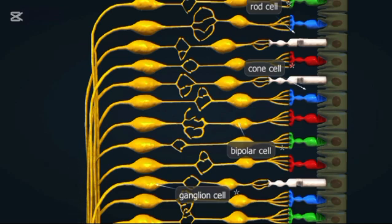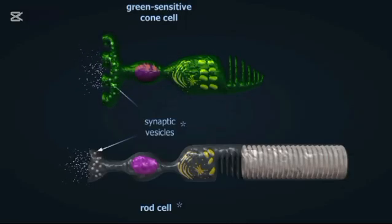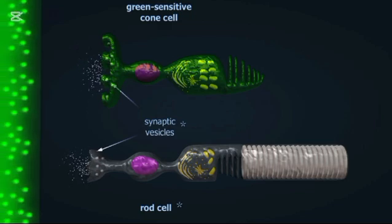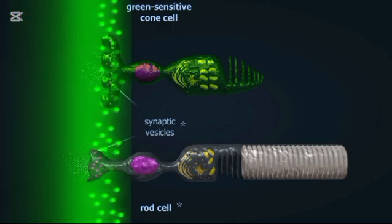Green-sensitive cone cells are specialized cells in the retina that help us detect green light. Synaptic vesicles are tiny sacs in nerve cells that store and release chemicals called neurotransmitters.